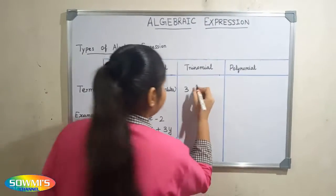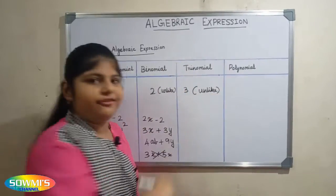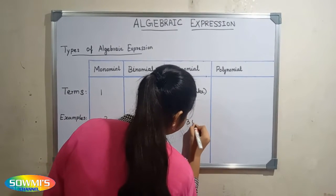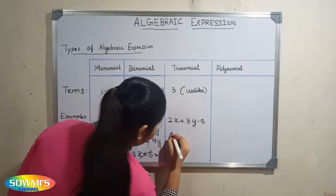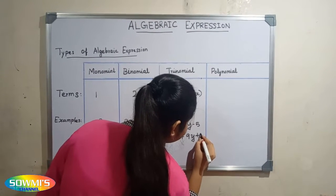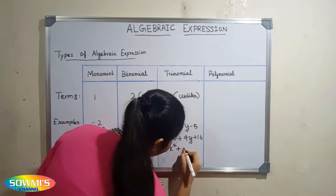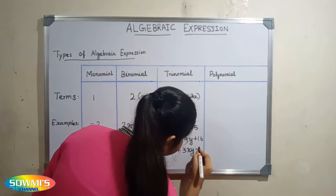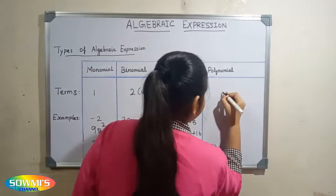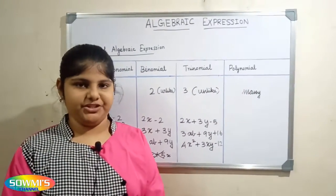Trinomial: an algebraic expression that contains 3 unlike terms is called a trinomial. For example: 2x plus 3y minus 5, 3ab plus 9y plus 16, 4x squared plus 3xy minus 12.